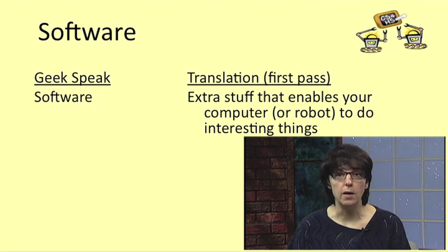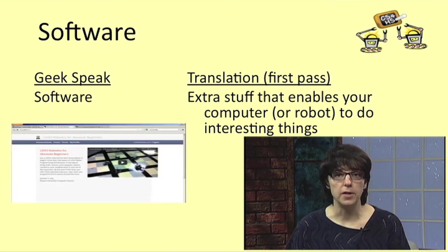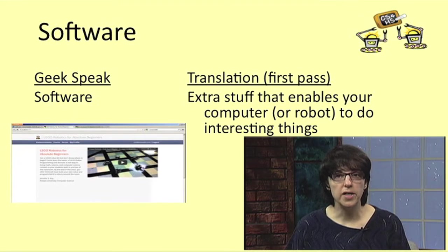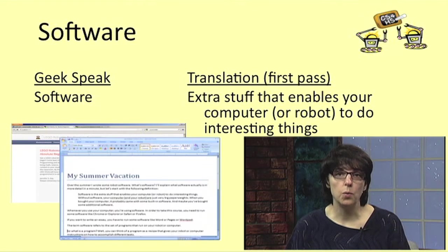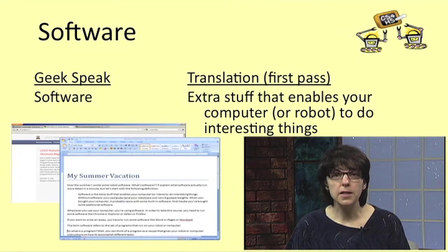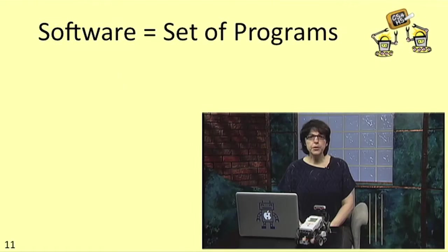You're running software right now. In order to take this course, you need to run some web browsing software like Chrome, Explorer, Safari, or Firefox. And if you want to write an essay, you have to run some software like Word, Pages, or WordPad. Let's work on a better definition of the term software: software really means the set of programs that run on your robot or your computer.